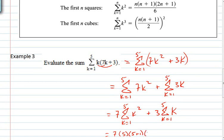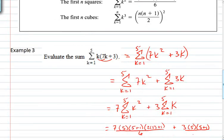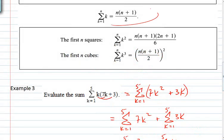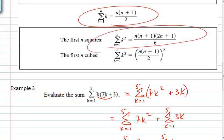times 2 times 5 which is 10 plus 1 all over 6 plus this is 3 times n which we said was 5 times n plus 1 which is 5 plus 1 divided by 2. I'm using this formula right here for the sum of k and this one right here for the sum of k squared because that's what I have right here the sum of k squared and the sum of k.